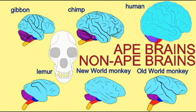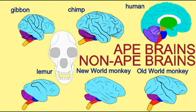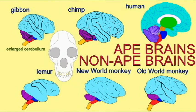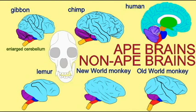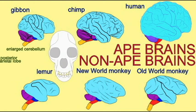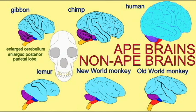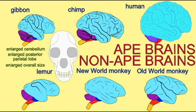The brain of apes is different from the brain of monkeys in a number of areas. The cerebellar hemispheres are greatly expanded, so that the cerebellum of apes is much larger than in monkeys. The posterior parietal lobe is also increased in size. Overall, the brain is larger in apes.